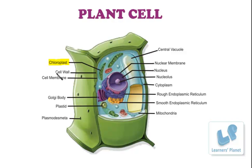Another part labeled here is the cell wall. In the plant cell, the plasma membrane is covered by another covering known as the cell wall. It is a dead membrane made up of cellulose. It is quite thick in nature. The cell wall in plant cells is required to maintain the structural integrity of the cell and provides rigidity.